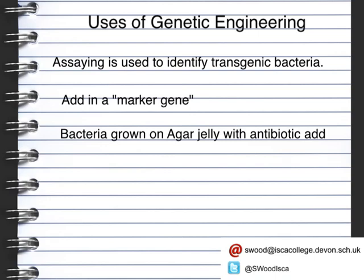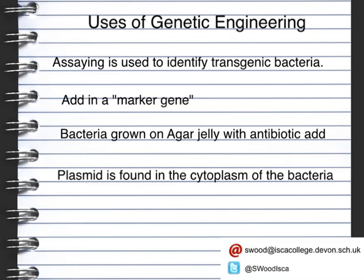Once they've identified the transgenic bacteria, they are then able to extract the plasmid. The plasmid is found in the cytoplasm of the bacteria cell and not in a nucleus. These plasmids are taken up by the bacteria and used as vectors — a vector being the bacteria that contains the new gene that's been added to it.